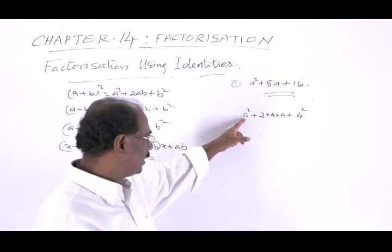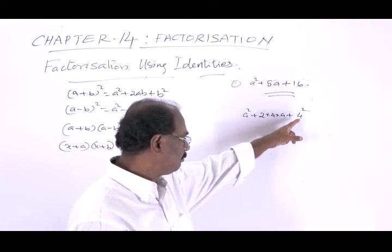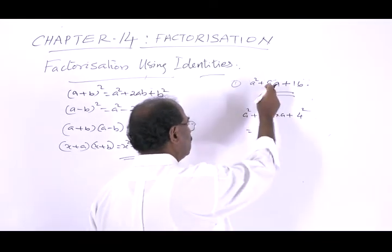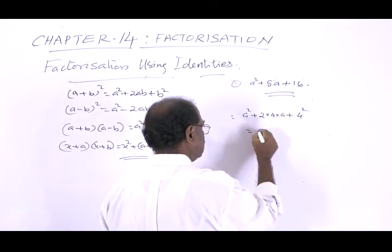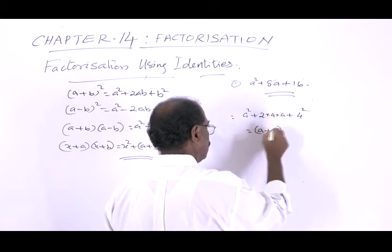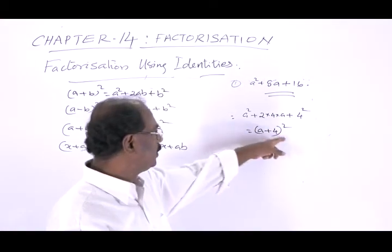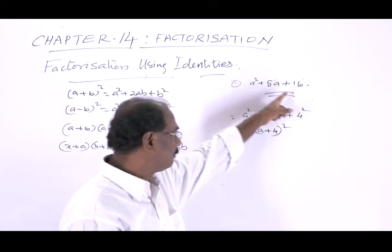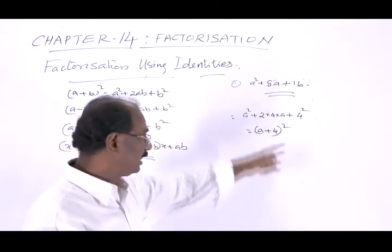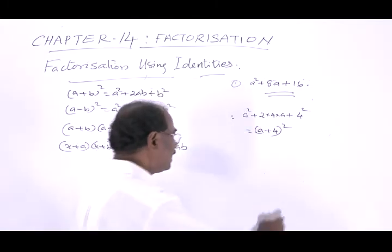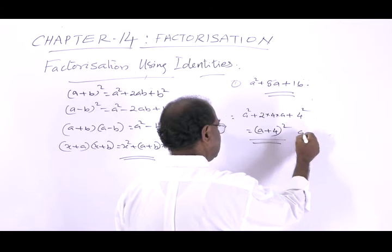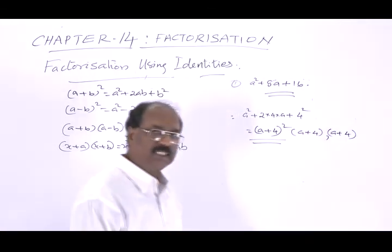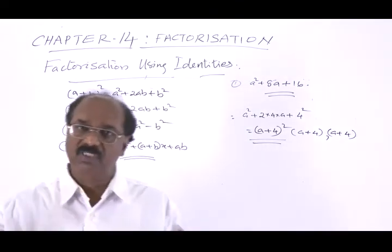This is a² + 2ab + b² with b = 4. So this is equal to (a + 4)². We verify: a² + 2 × a × 4 + 4² gives a² + 8a + 16, which matches the given expression. Therefore, the factors are (a + 4) and (a + 4) — two equal factors.